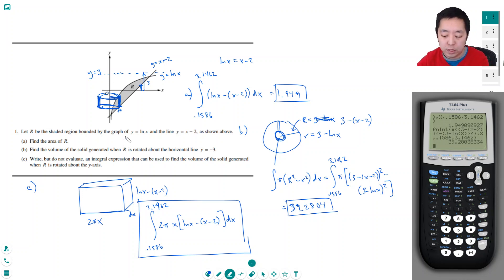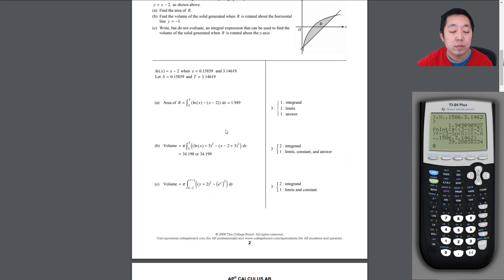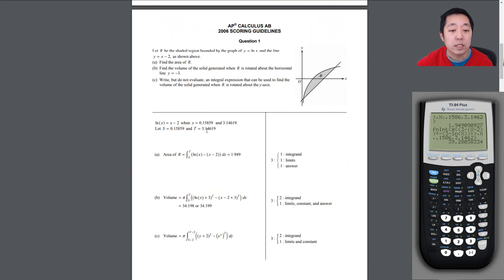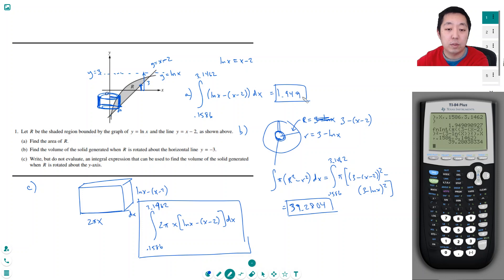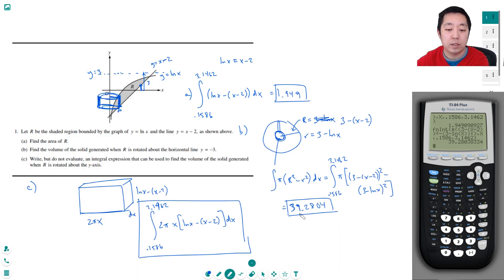But yeah, so let's take a look at the solutions here. Let's see, so we found the intersection points. The area is 1.949, is that what we had? 1.949, good. This is 34.198. Hmm, why did I get 39?